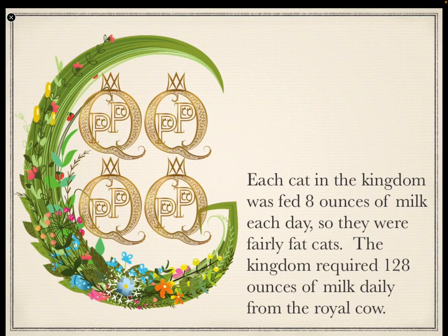Each cat in the Kingdom was fed eight ounces of milk each day, so they were fairly fat cats. The Kingdom required 128 ounces of milk daily from the royal cow.